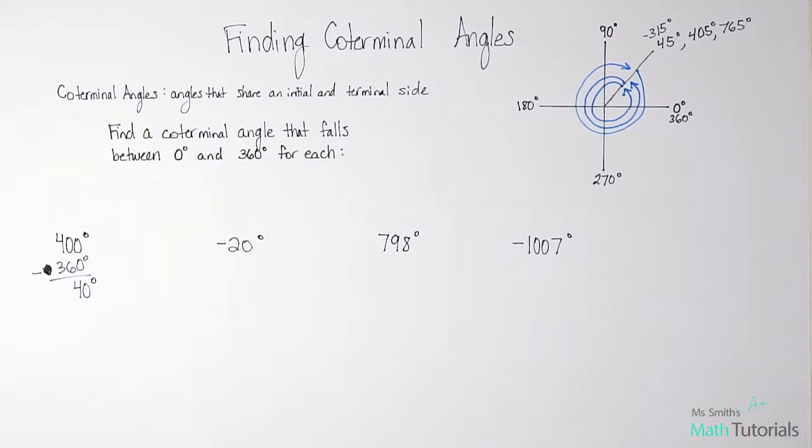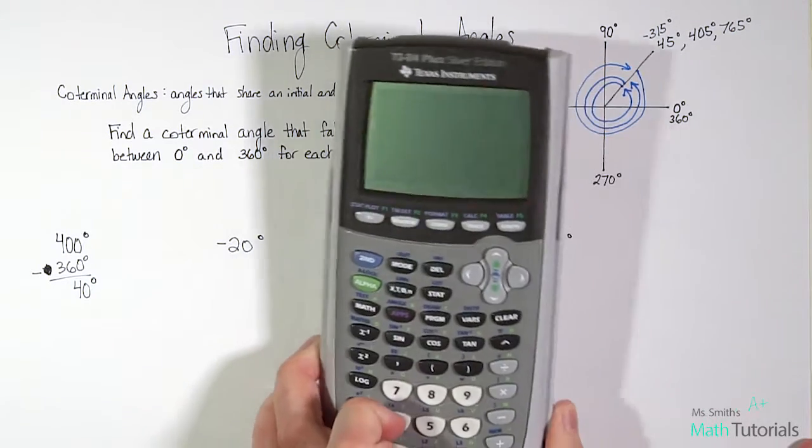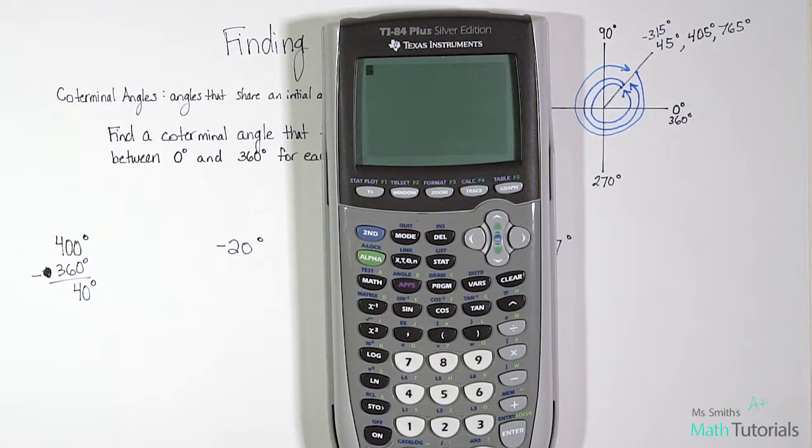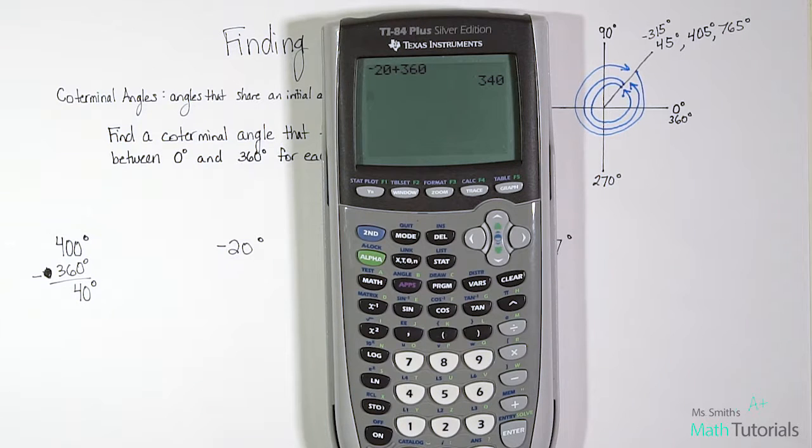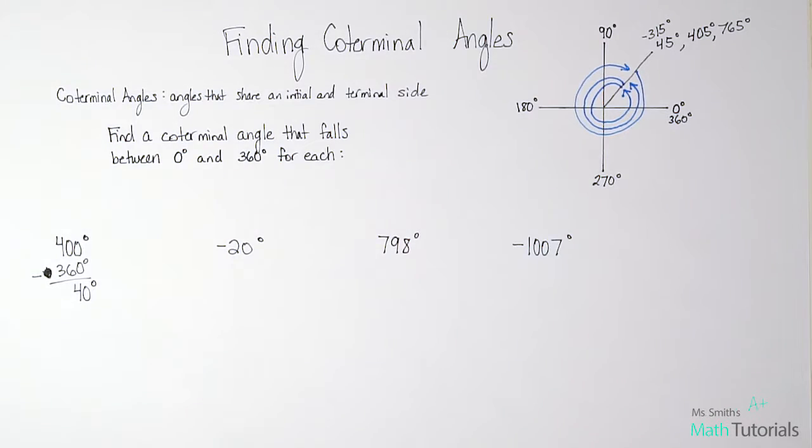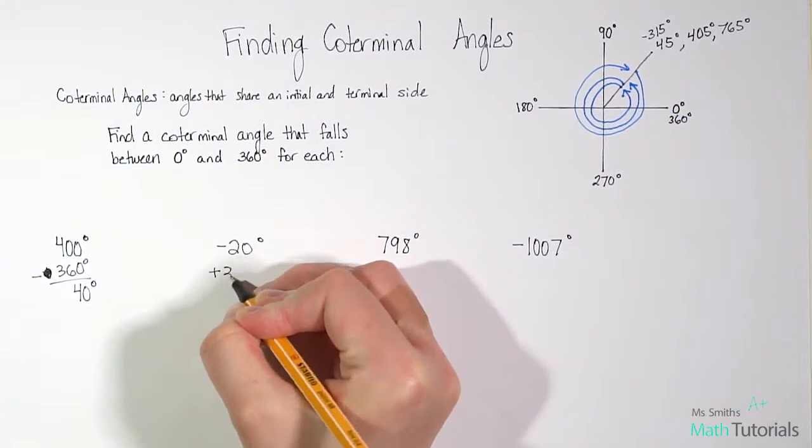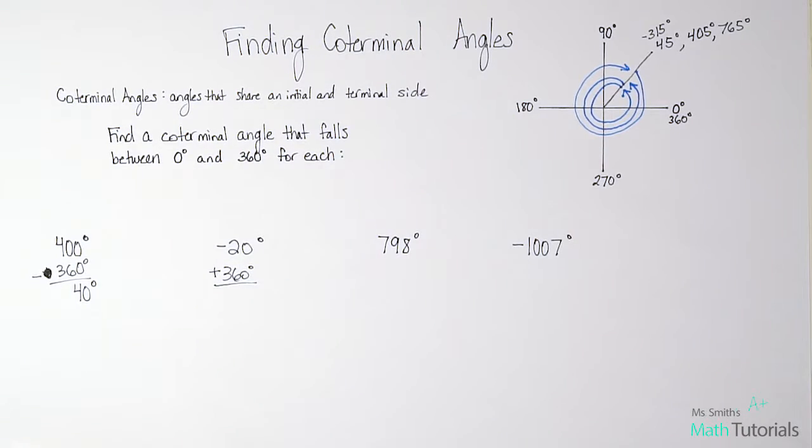Okay, so for this next one, negative 20 degrees. Negative 20 is way less than zero degrees. We need to, in this case, instead of subtracting 360, we need to add 360 to find a coterminal that would be between zero and 360. So we're starting at negative 20 and we're going to add to it 360 degrees. That would put us at 340 degrees. And is that between zero and 360? Yes. So we're good to go. So we, in this case, added 360 degrees to give us 340 degrees.